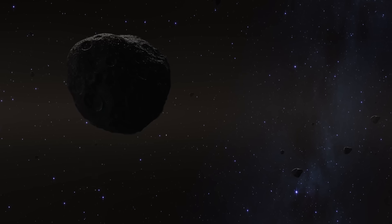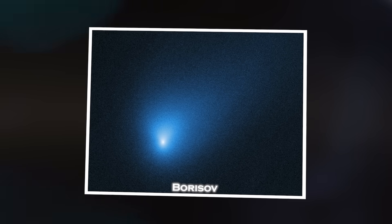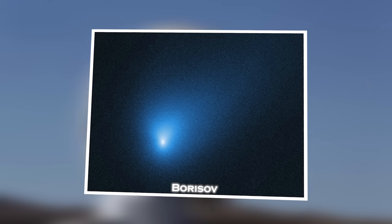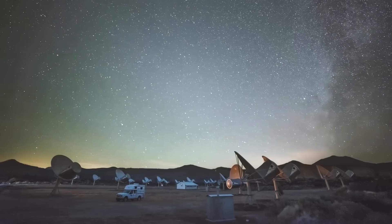Then, in 2019, Borisov entered the picture, clearly a comet, yes, but faster and more volatile than anything seen before. With each of these objects, we were left with more questions than answers.